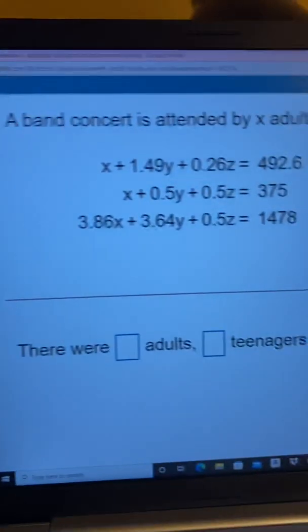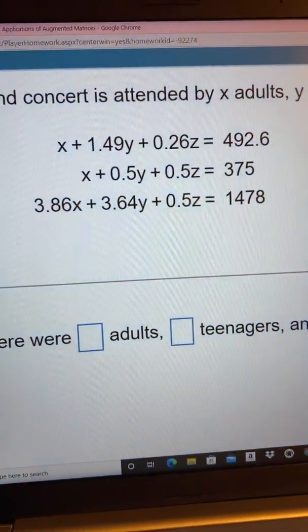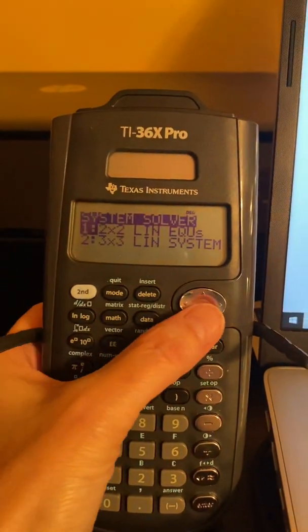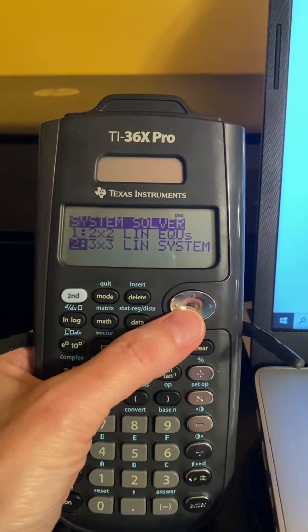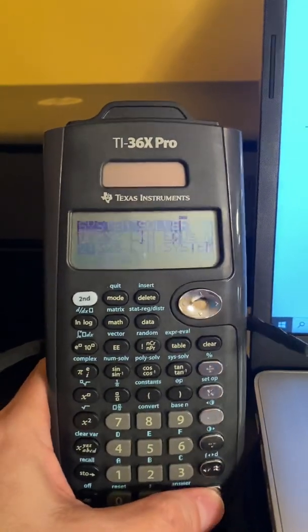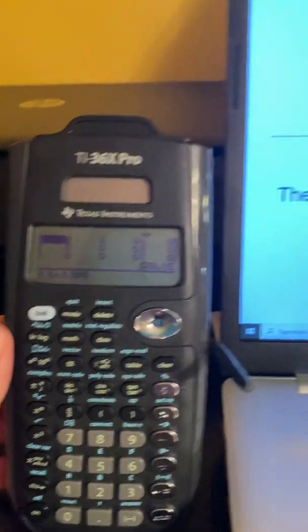And since we have a 3x3 system of equations, that's what we're going to choose. So we're going to scroll down to the 3x3 linear system and we hit enter. And so this brings up a 3x3 matrix.